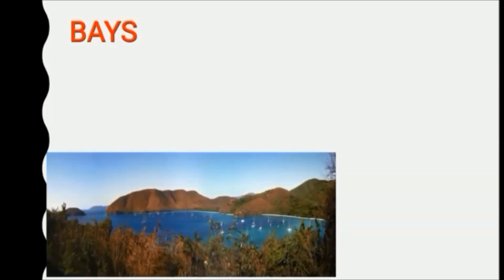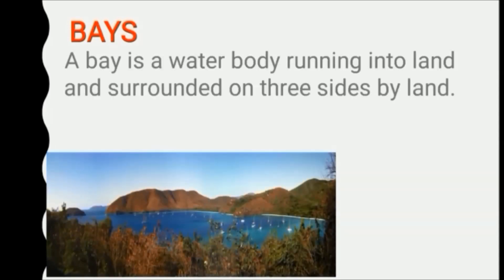What is a bay? Bay is a water body which is surrounded by land on three sides. So a peninsula is a land surrounded by water on three sides, but a bay is a water body surrounded by land on three sides. For example, the Bay of Bengal, which is on the eastern coast of India.